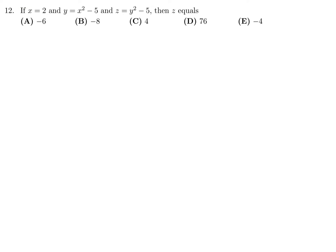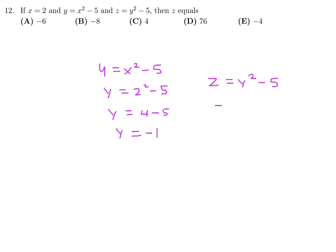x is 2, y is x² minus 5, z is y² minus 5. So y equals x² minus 5, therefore y equals 2² minus 5, which is 4 minus 5 equals negative 1. Then z equals y² minus 5, so z equals (−1)² minus 5, which is 1 minus 5 equals negative 4. Number 12, the answer is E.